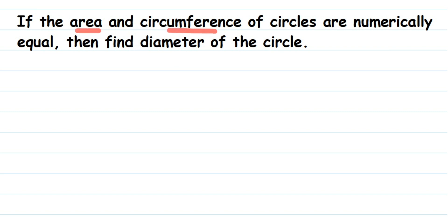So how to find out the diameter? If you find out the radius at least, then you can find out the diameter. So let's write down what is given. We have given area and circumference are numerically equal, which means the number or the value is the same.